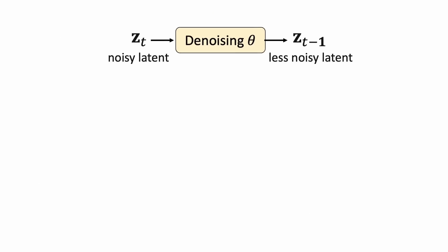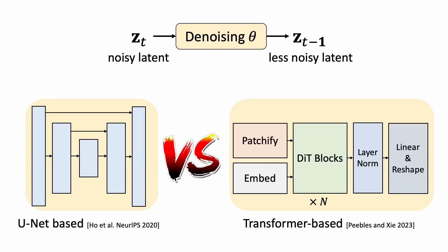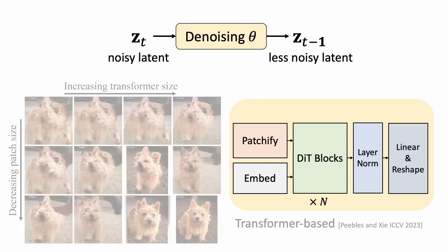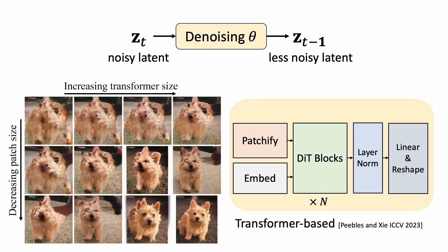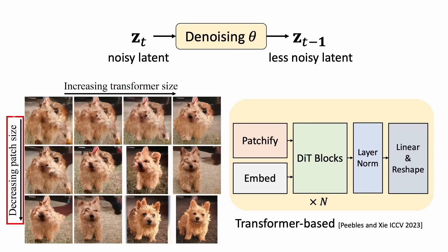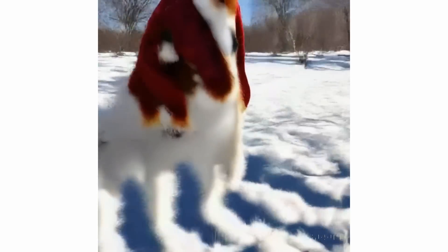We can use a U-Net or a transformer-based model for our denoising network. Sora uses a diffusion transformer for its flexibility and scalability in data and compute. We can see that scaling the model size and the number of tokens both improve the generation quality.